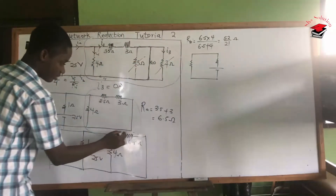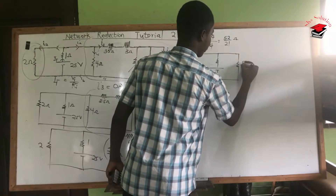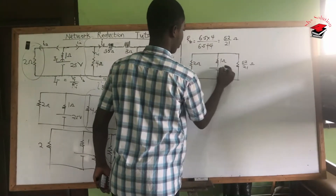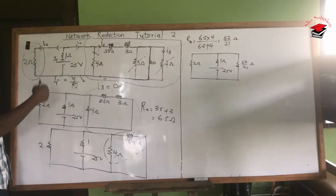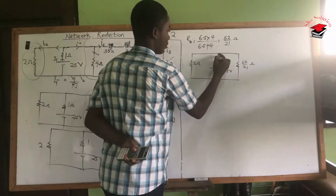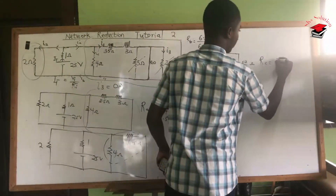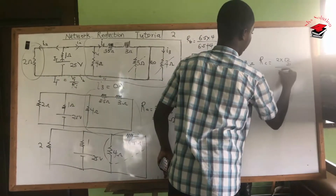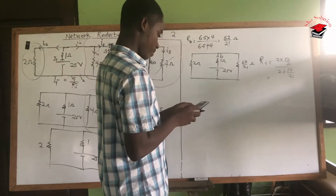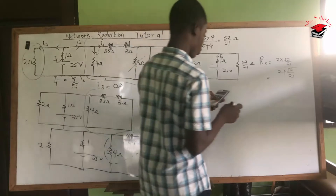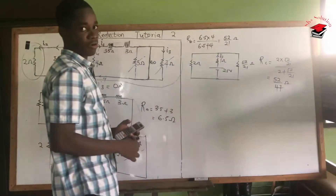In our updated circuit we have a 1-ohm resistor, a 2-ohm resistor, and the equivalent Rb of 52/21 ohms, with the 25-volt source. The 2-ohm and the 52/21-ohm are in parallel. Let's call this equivalent Rc. So Rc equals 2 multiplied by 52/21 over 2 plus 52/21, which gives us 52/47 ohms.